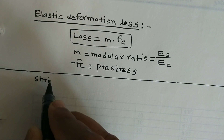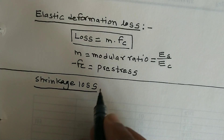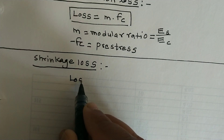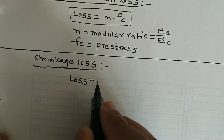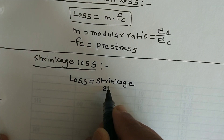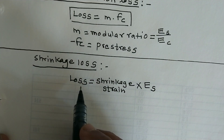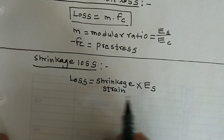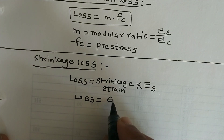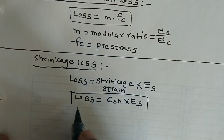Next is shrinkage loss. This loss is developed due to the shrinkage property of concrete. The loss is calculated using shrinkage strain multiplied by Young's modulus — this is the basic definition of stress: strain multiplied by Young's modulus. So the loss is calculated as epsilon_sh multiplied by Es.